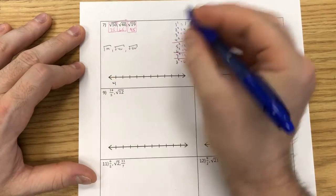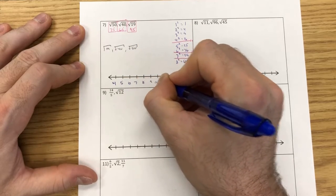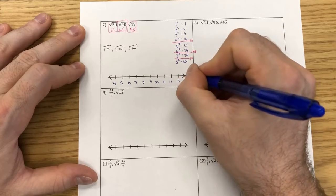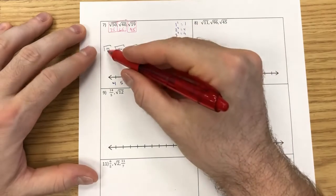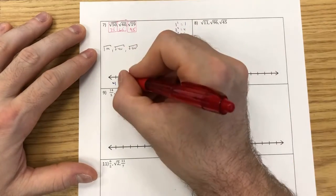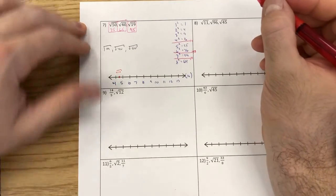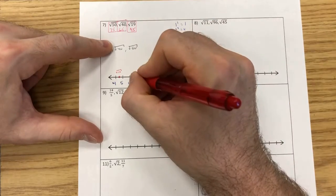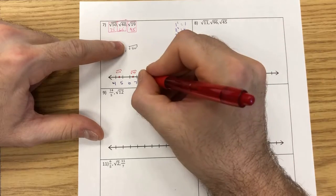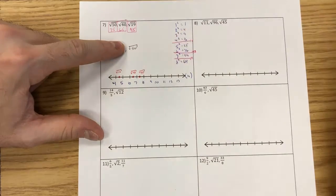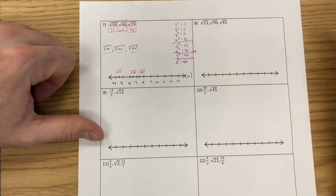I start at 5 and count by 1s: 6, 7, 8, 9, 10, 11, 12, 13. Between 4 and 5, there's my square root of 19. 40 is between 6 and 7, so I put another point right there. And 50 is between 7 and 8. Now I've listed each one of these on my number line and we're good.